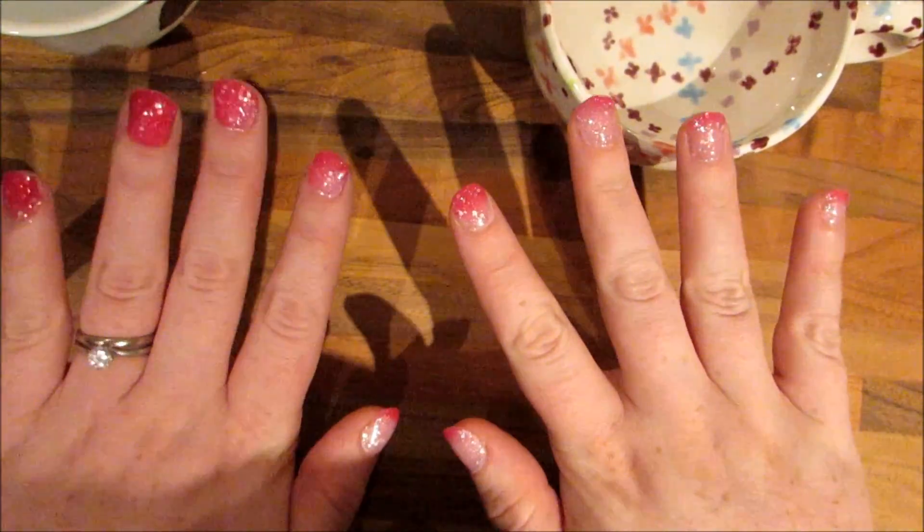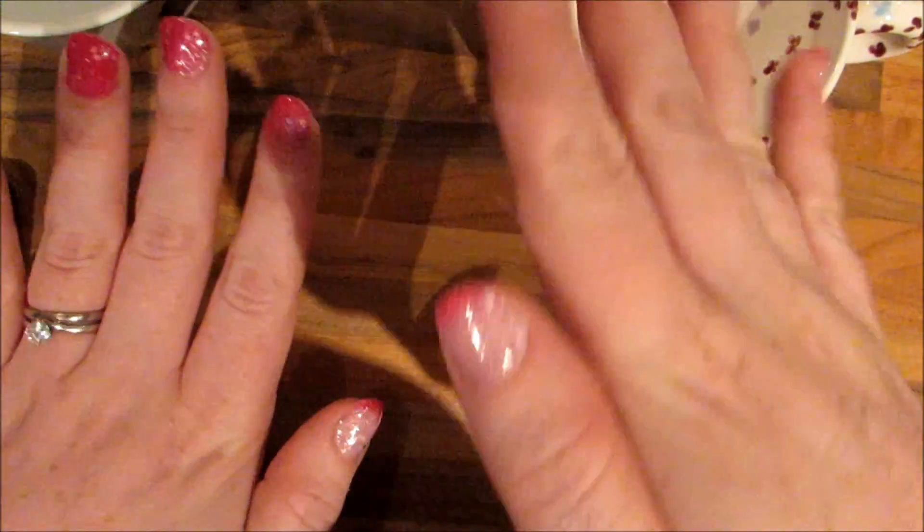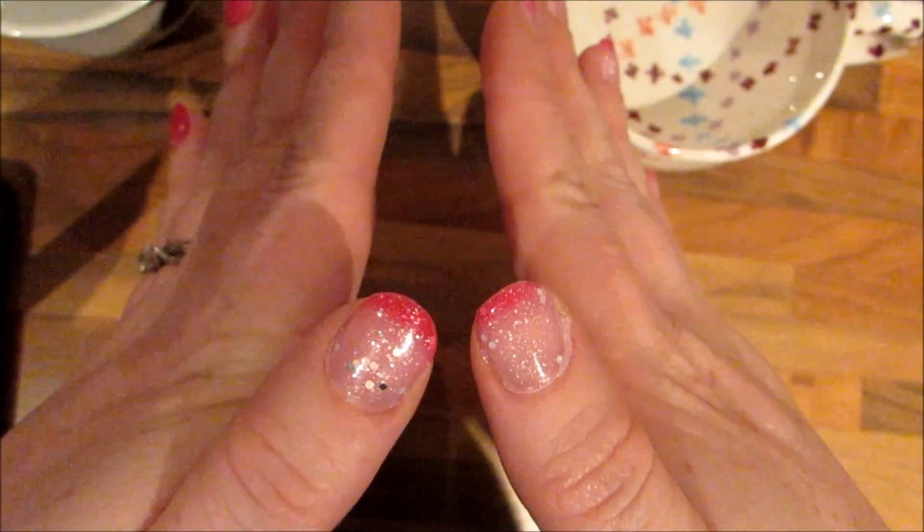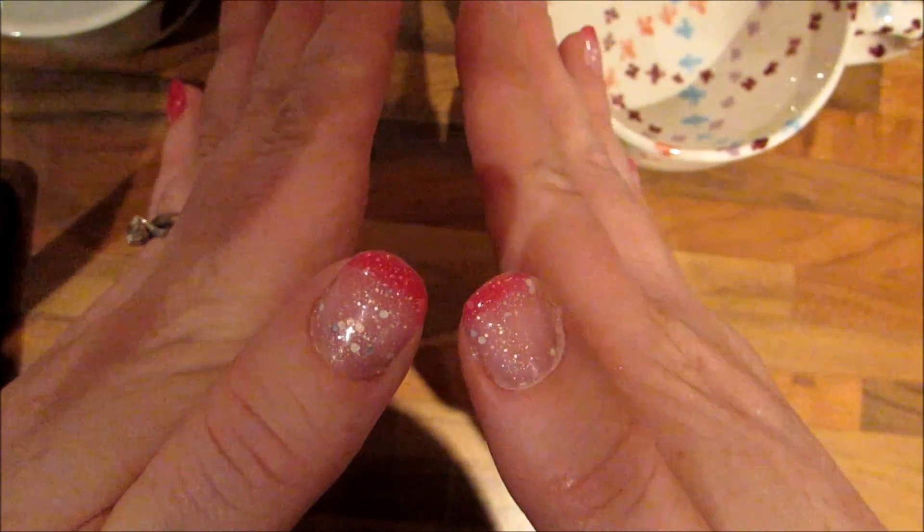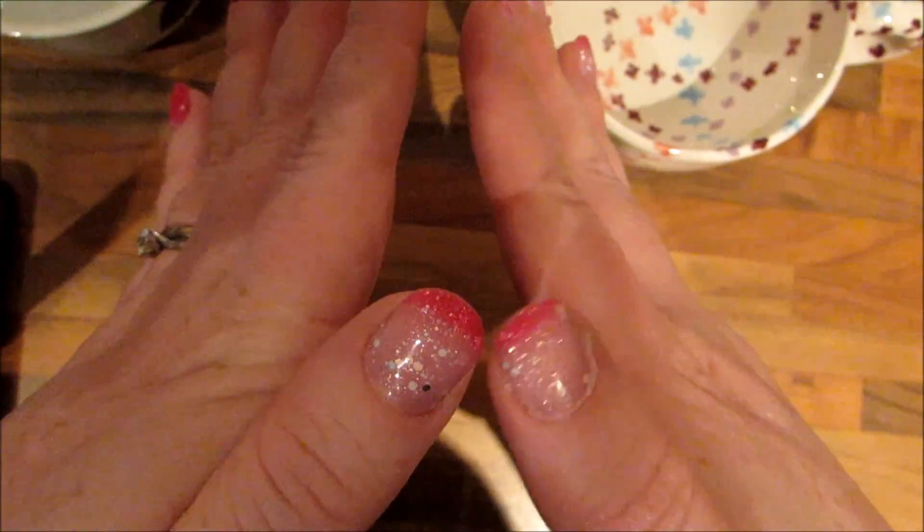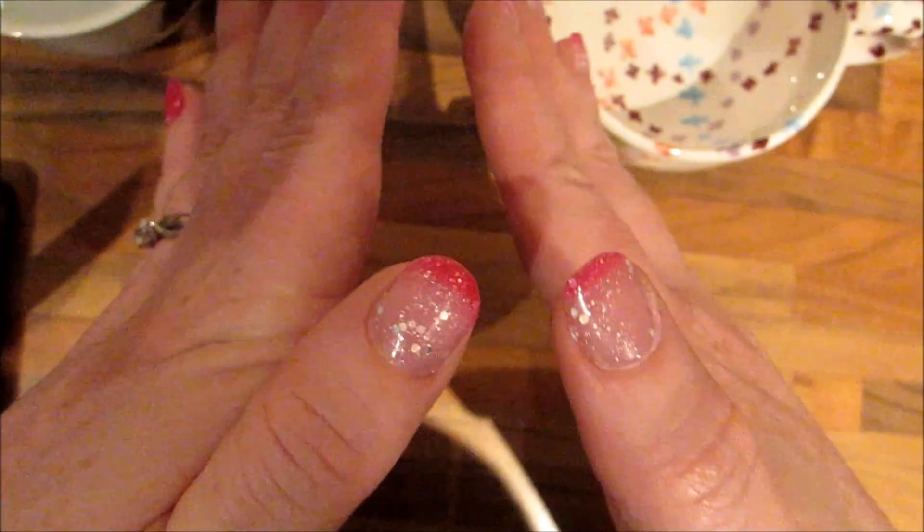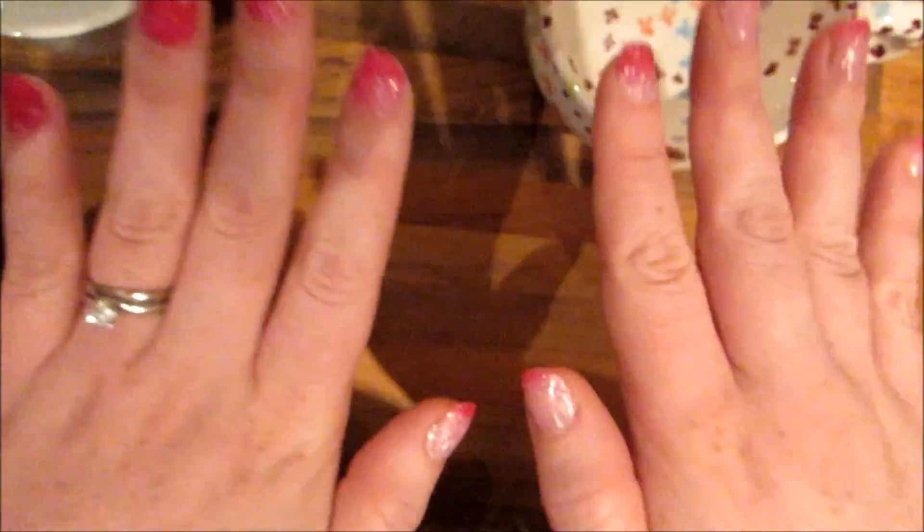So I have done my nails with the Color Change Gel. You can see that it looks quite warm around my thumbs at the moment. The tips are pink where it's not in contact with my skin, and the beds are white where it's nice and warm.